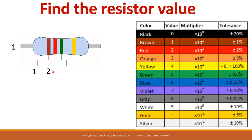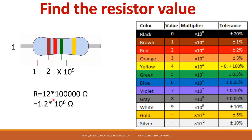Brown gives 1 and red gives 2. The third band is the multiplier — it is green in color, so green is 10 to the power 5. So we write this as 12 into 10 power 5, which means adding five zeros, giving 1.2 into 10 power 6 ohms, or 1.2 mega ohms.